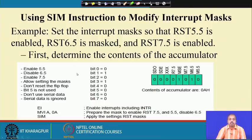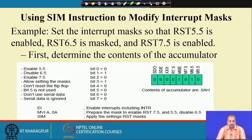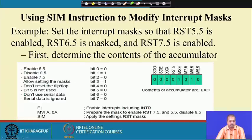For example, suppose we want to set the interrupt masks so that RST 5.5 is enabled, RST 6.5 is masked off, and RST 7.5 is enabled. We must identify the correct accumulator content: to enable 5.5, bit 0 should be 0; to disable 6.5, bit 1 should be 1; to enable RST 7.5, bit 2 should be 0. We must also allow this mask setting, so the MSE bit — bit 3 — is made equal to 1.